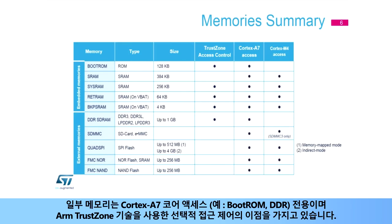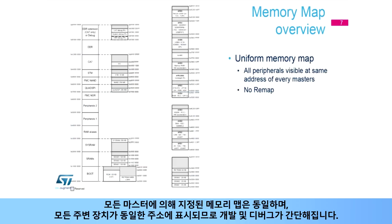Some memories are dedicated to Cortex-A7 core access — for example, boot ROM and DDR — and benefit from optional access control using ARM TrustZone technology. The memory map addressed by any master is the same.